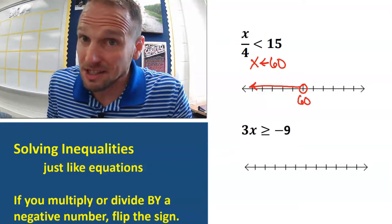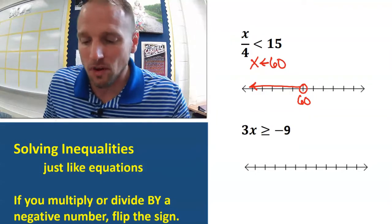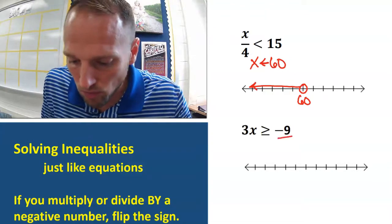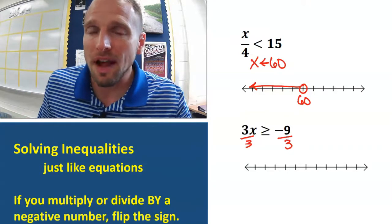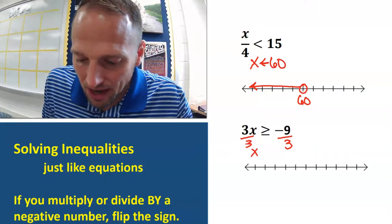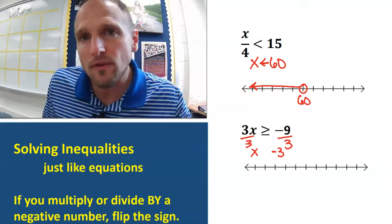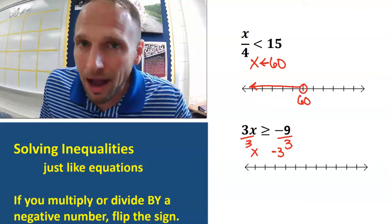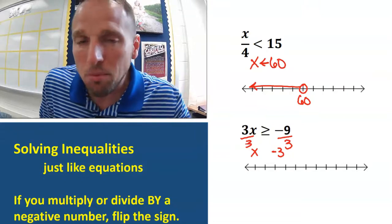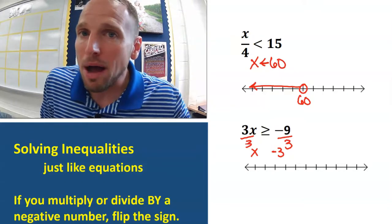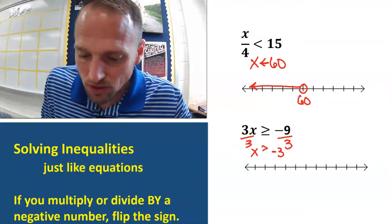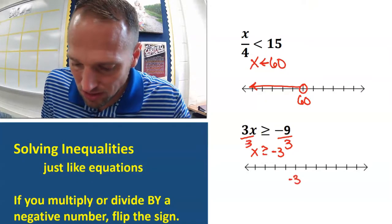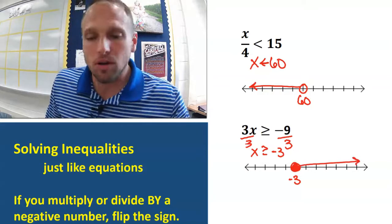There's a negative in this problem, so I'm wondering if I'll need to change something. Looking at the X: I need to divide both sides by 3. Negative 9 divided by 3 is negative 3. Now — do I flip the sign? I'm dividing by positive 3, even though the 9 is negative; that doesn't matter. I'm dividing by positive 3, so the sign stays the same. The answer is negative 3: filled-in circle, extra mark makes it dark, arrow pointing to the right. X is greater than or equal to negative 3.